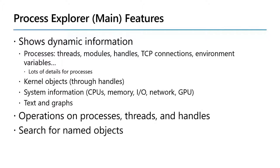One thing that Process Explorer also does very well is allow us to search for interesting objects across the system. This could be files or other named objects such as mutexes, semaphores and other types of objects Windows supports.